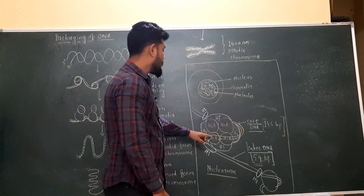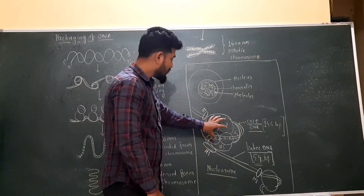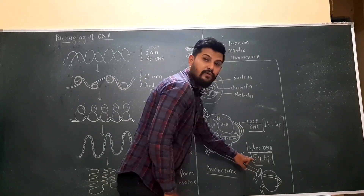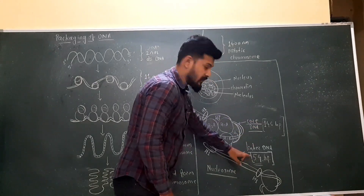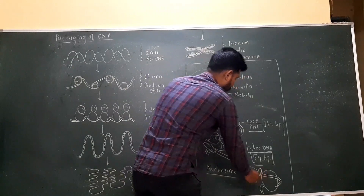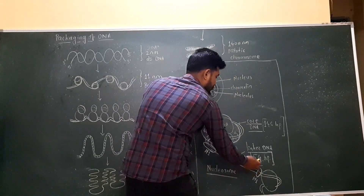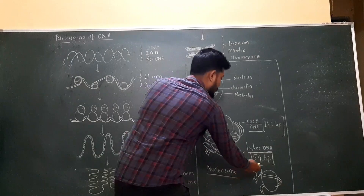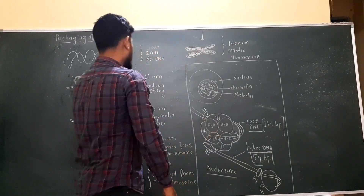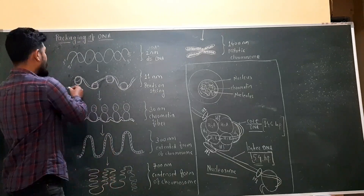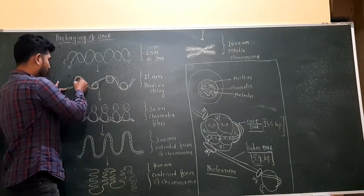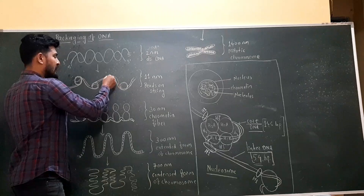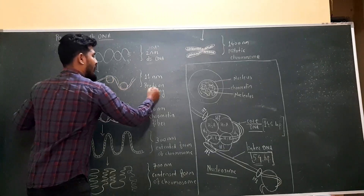So 146 base pairs of DNA are present around the histone octamer and it is called as the core DNA, and in the linker DNA around 54 base pairs are present. This core DNA plus linker DNA forms the structure of the nucleosome, which has around 200 base pairs — 146 plus 54. These nucleosomes are arranged like beads on string: DNA wrapped around the histone octamer, then linker DNA, then histone octamer again. This structure is called as the beads on string.